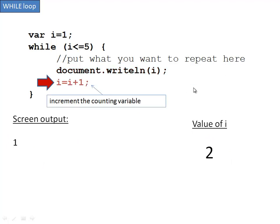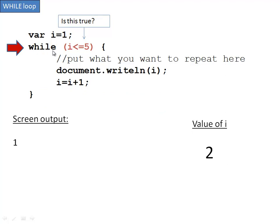Then it goes to the next line and increments the counting variable, setting it to 2. Then it goes back up to the while. Notice it doesn't go back up to this statement here. It just stays within the while statement once it's in. But it rechecks: is i less than or equal to 5? 2 is less than or equal to 5, so yes, it's true. It does the document.writeLine i. In this case, i is 2, so it writes 2.